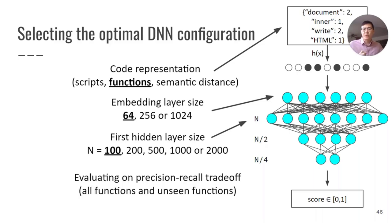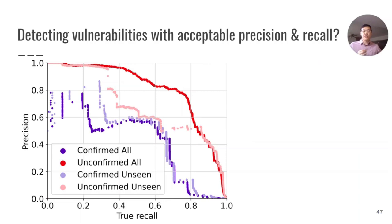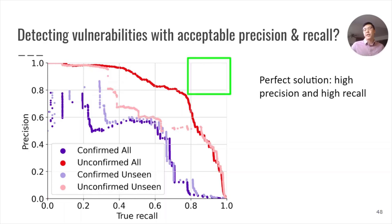When evaluating our model, rather than focusing on accuracy, we focus on the precision-recall trade-off, as this paints a better story when it comes to the tunability of our system. We evaluate both on all seen functions, as well as unseen functions, which do not previously appear in the original training dataset. Here is a precision-recall trade-off graph. The top right would indicate a high precision and a high recall — this would be the perfect and ideal solution, but of course is not always possible.